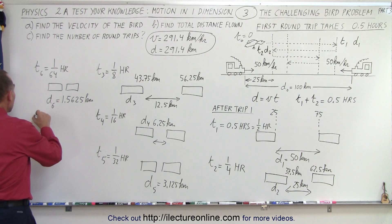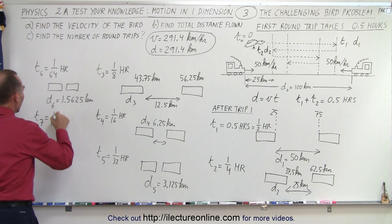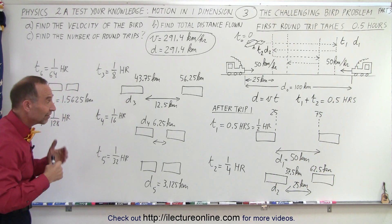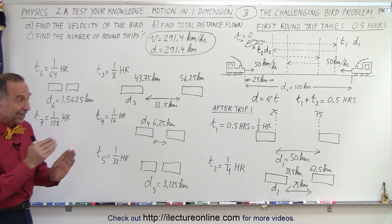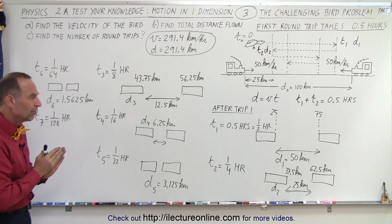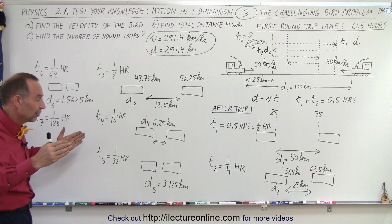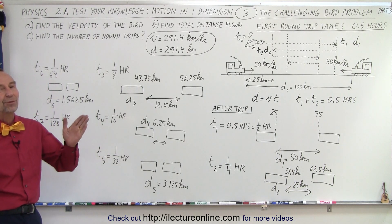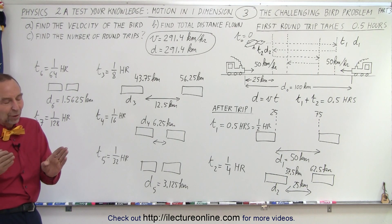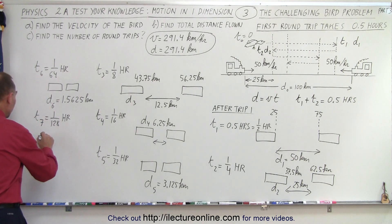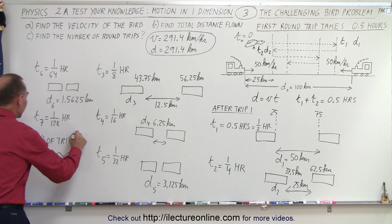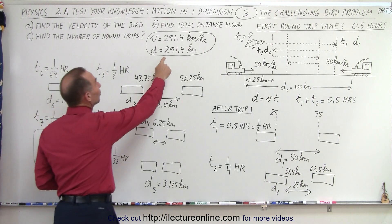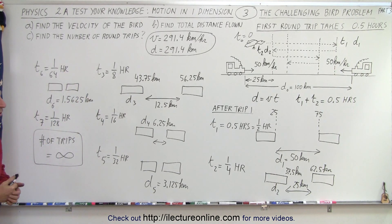The next trip takes one over 128 hours, then half of that, and half of that again. The bird will continue to fly back and forth — remember it's an instantaneous shift in direction — which means the bird will essentially cover an infinite number of trips before the trains finally meet. Because the distance keeps halving, in the limit you never actually reach zero theoretically. So the number of trips is equal to an infinite number of trips, and strangely enough after an infinite number of trips the bird will have covered a distance of 291.4 kilometers.